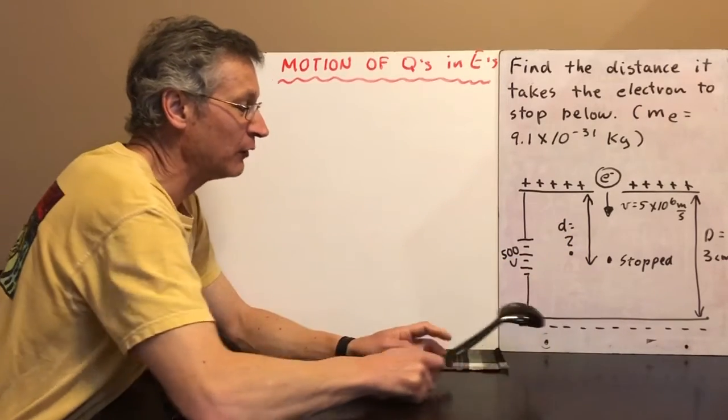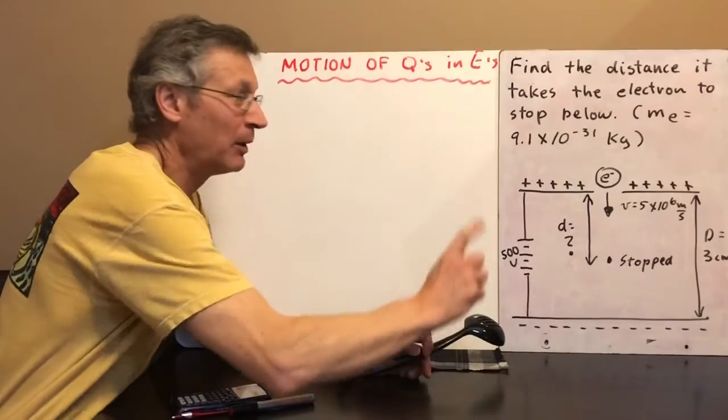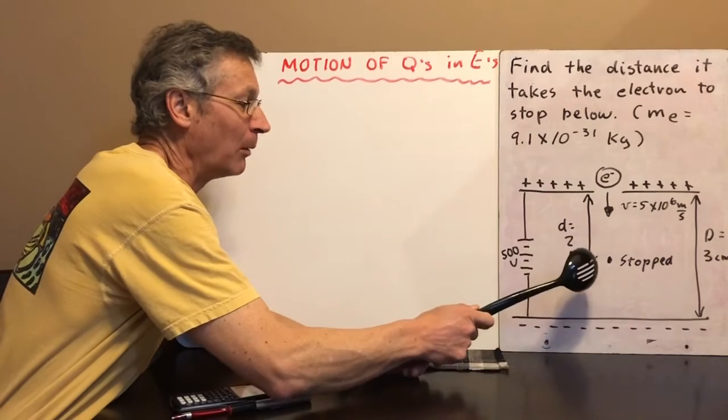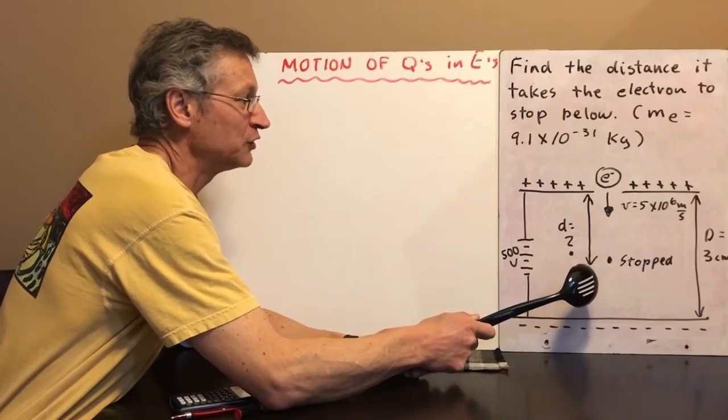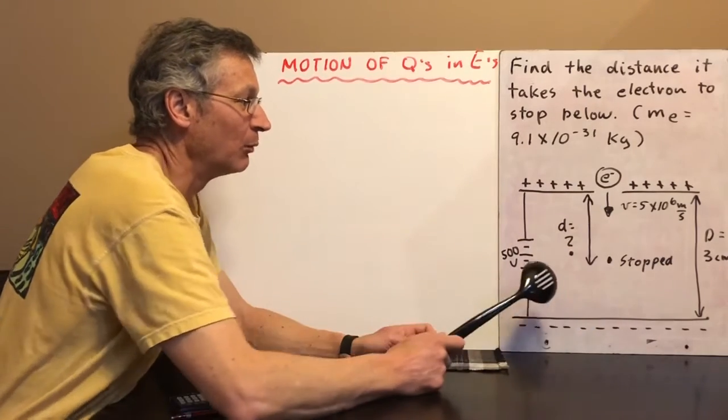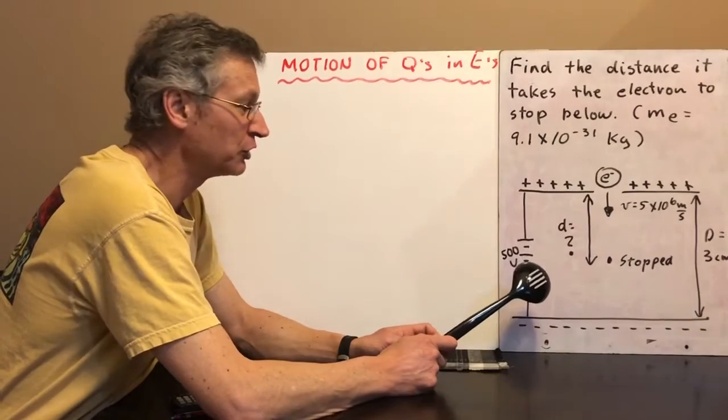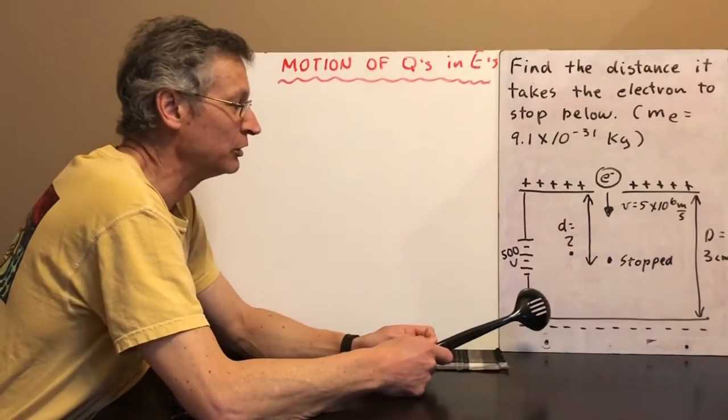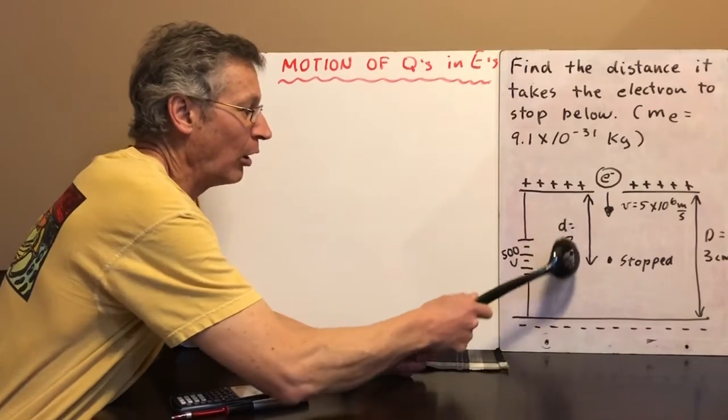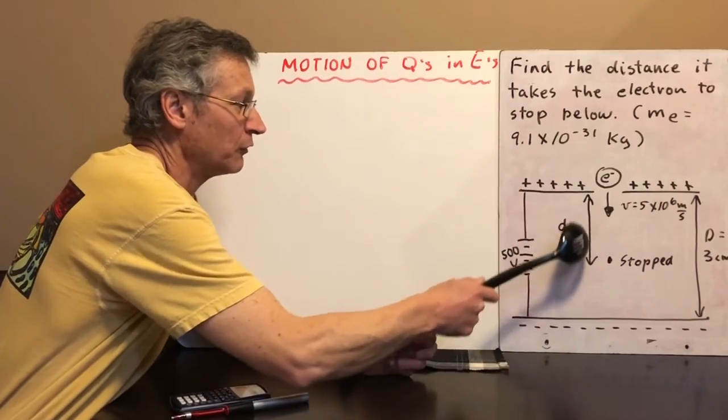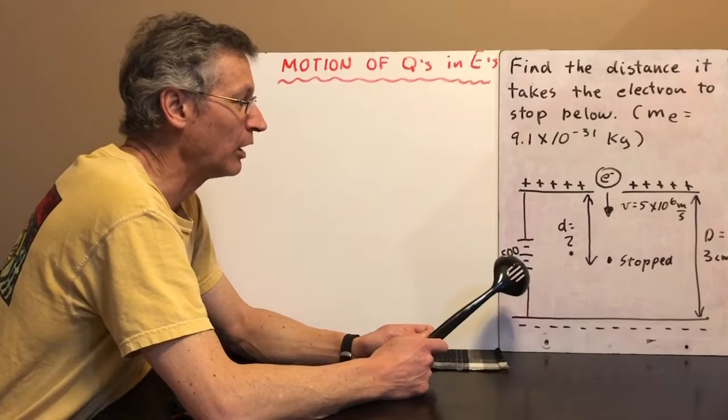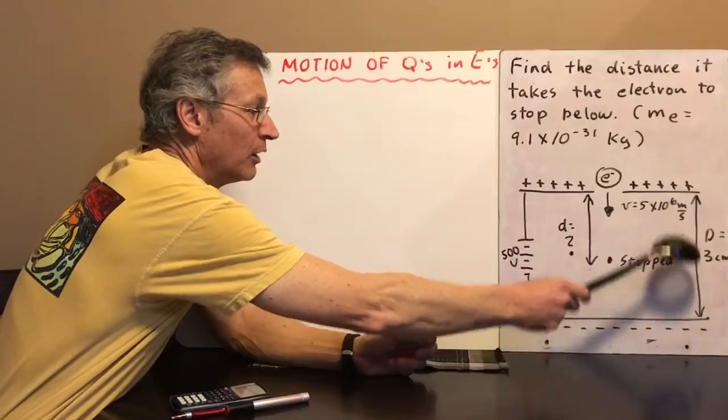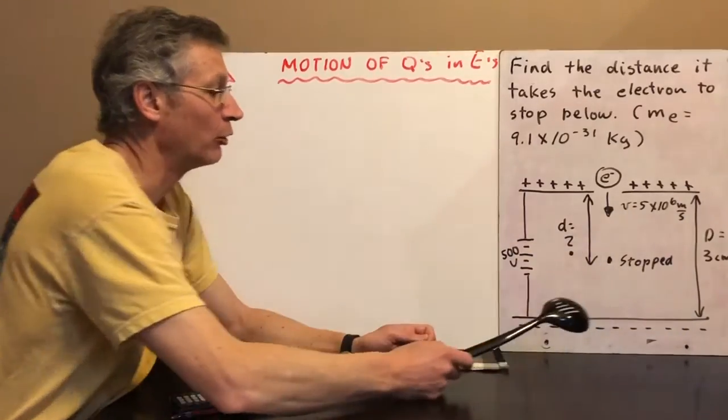They are connected to a 500 volt battery. You'll notice the top positive plate has a little hole in it. Our electron arrives at this hole in the top plate with a velocity of 5 times 10 to the 6 meters per second and you can imagine what's going to happen to this electron as soon as it gets into that space between the plates. We also know that the plates are a total distance of 3 centimeters apart.